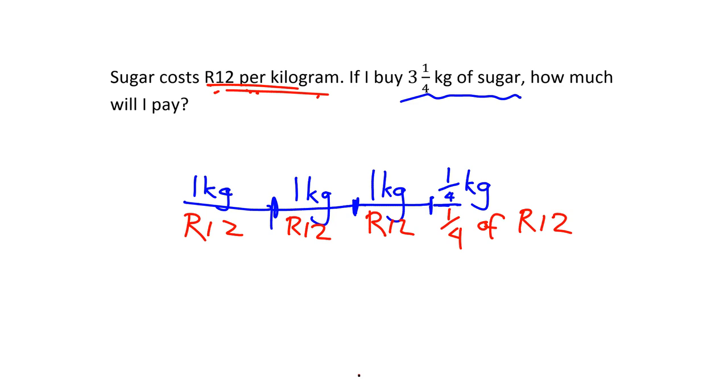So now I can see quite clearly what's going on. I've got one, two, three, three and a quarter kilograms. And I'm going to pay three times 12, quarter times 12. So what I can see I'm doing in order to get the answer is to say I'm going to take three and a quarter and I'm going to multiply it by 12.